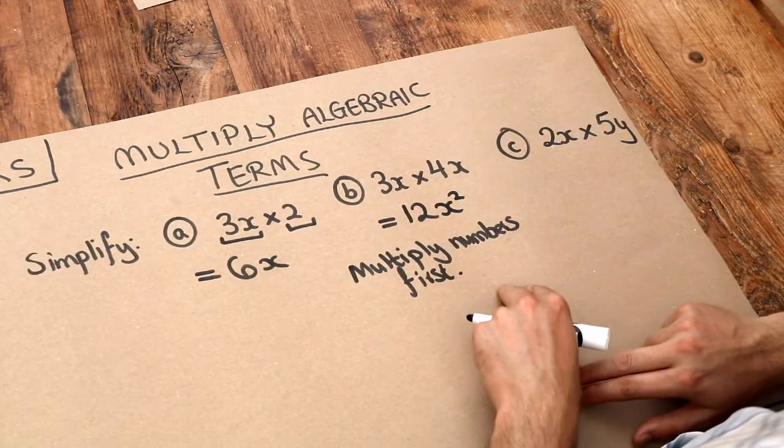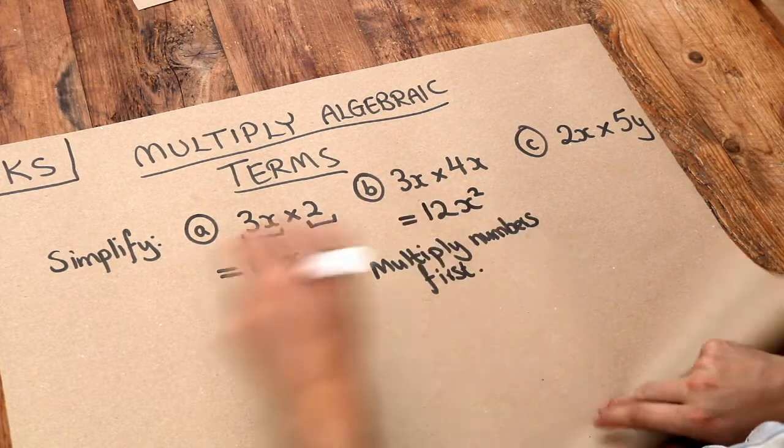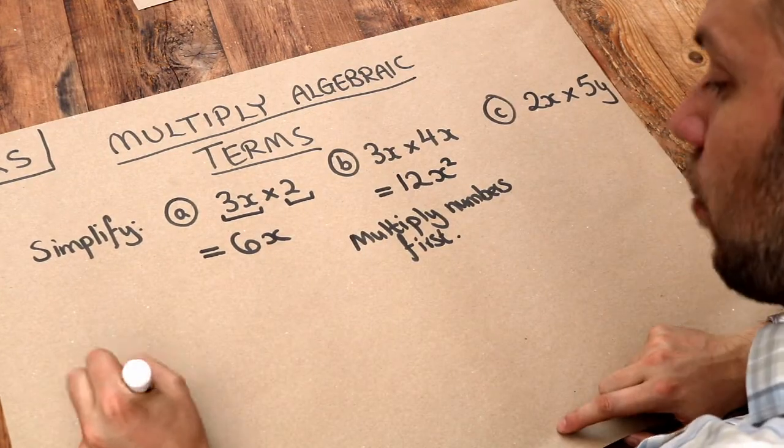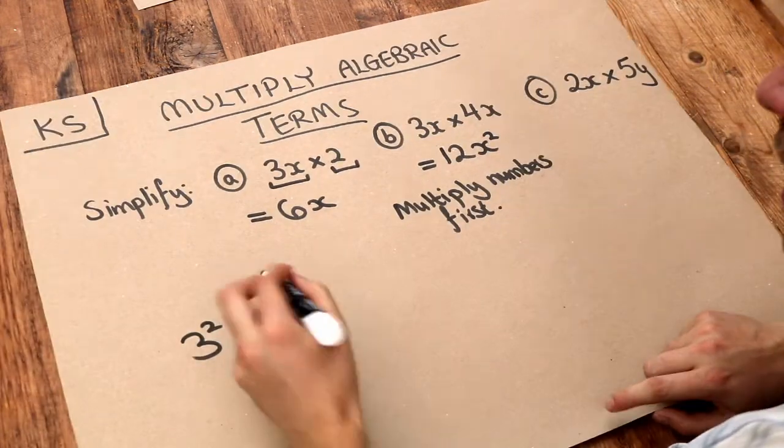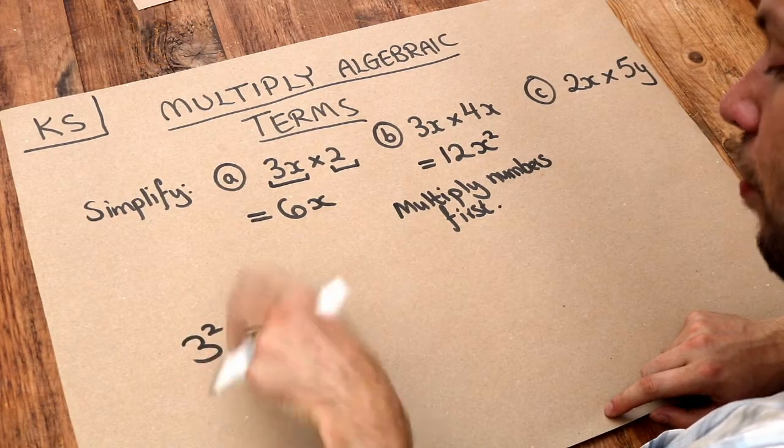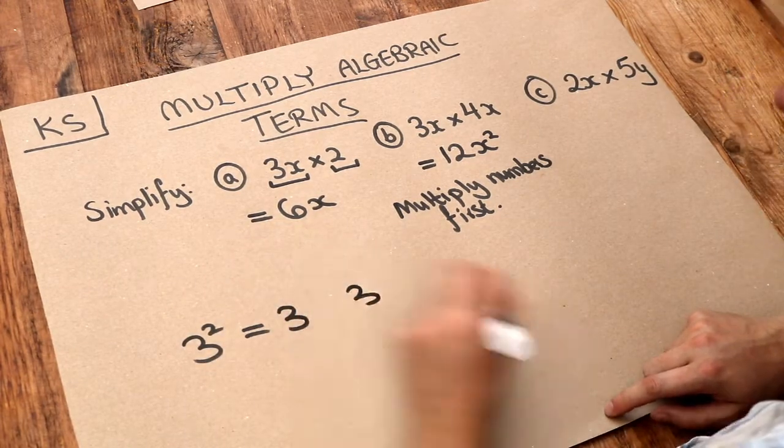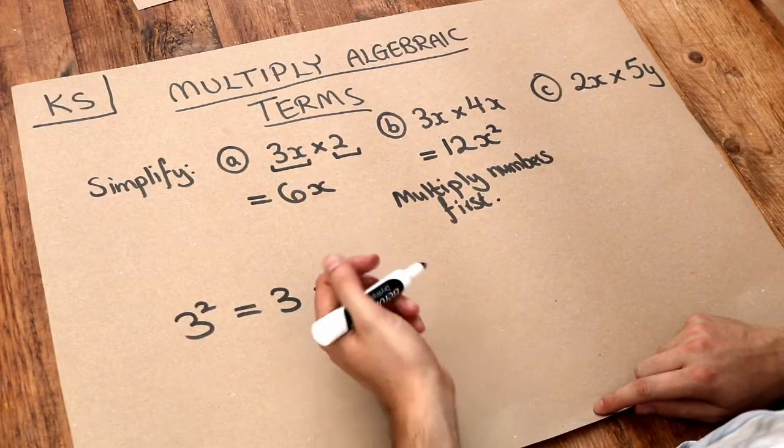Now if you remember back to the video on powers, when we write, say, 3 squared, what that means is taking two 3s and multiplying them together. So 3 squared means 3 times 3.